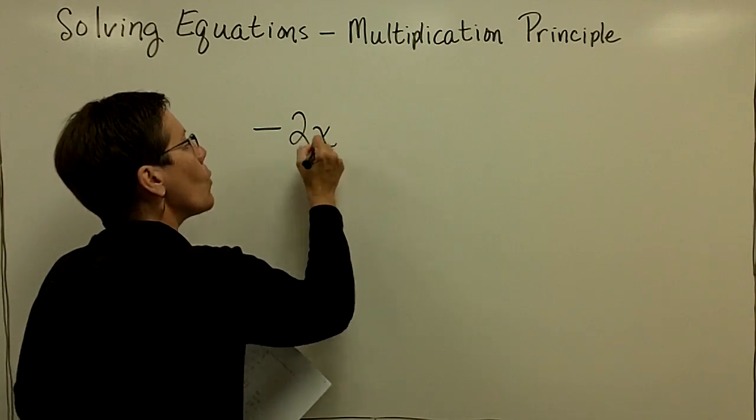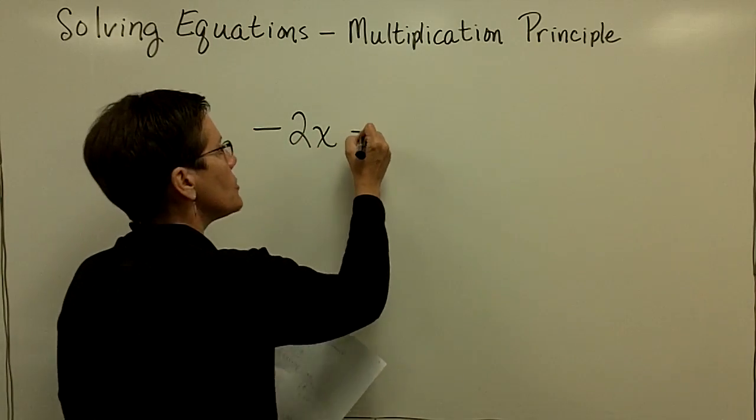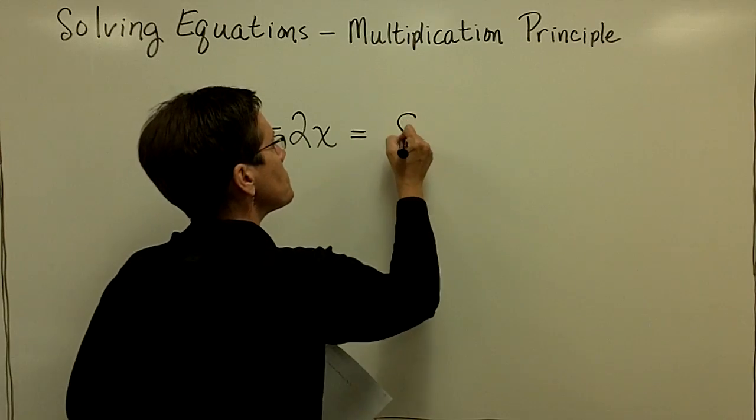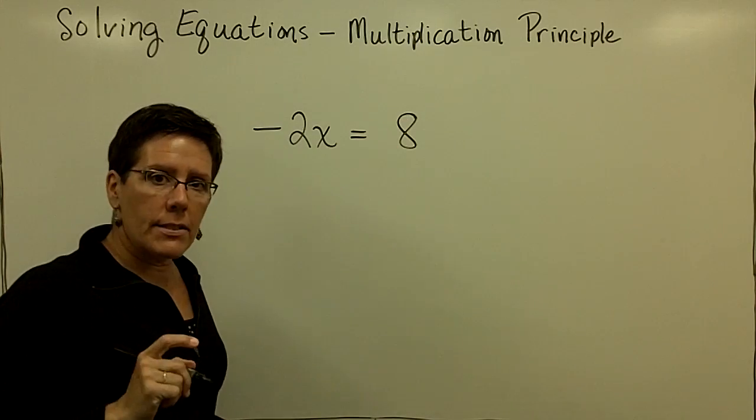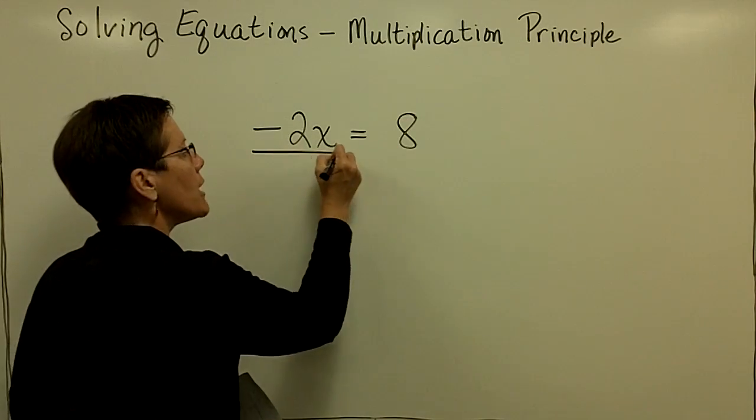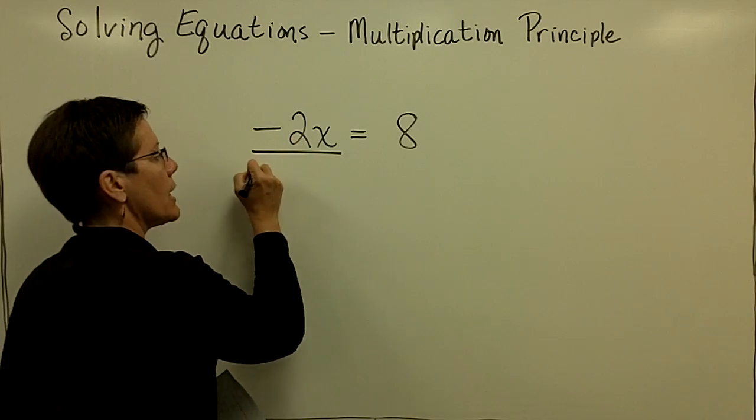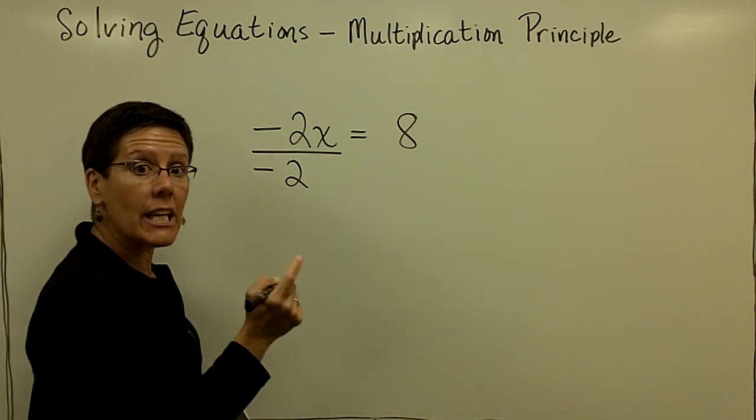I'd like to solve for x when it has a coefficient of a negative 2x. So to isolate the variable x, I have to divide by the whole coefficient. I have to divide both sides by a negative 2.